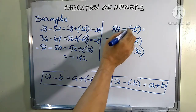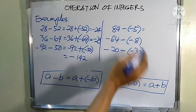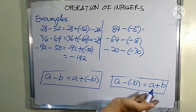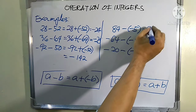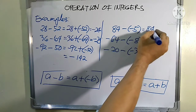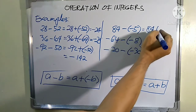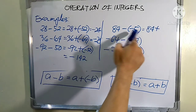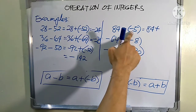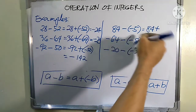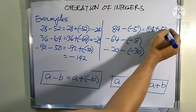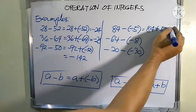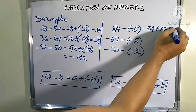Next, 84 minus negative 5. By following the rule, we rewrite this as 84 plus the opposite of negative 5, which is positive 5. The answer is 89.